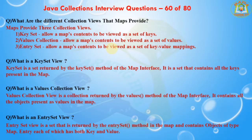The next question is: what are the different collection views that maps provide? Map provides three collection views. The first one is keySet, which allows a map's contents to be viewed as a set of keys. The second one is values collection, which allows a map's content to be viewed as a set of values. The third one is entrySet, which allows a map's contents to be viewed as a set of key-value mappings.